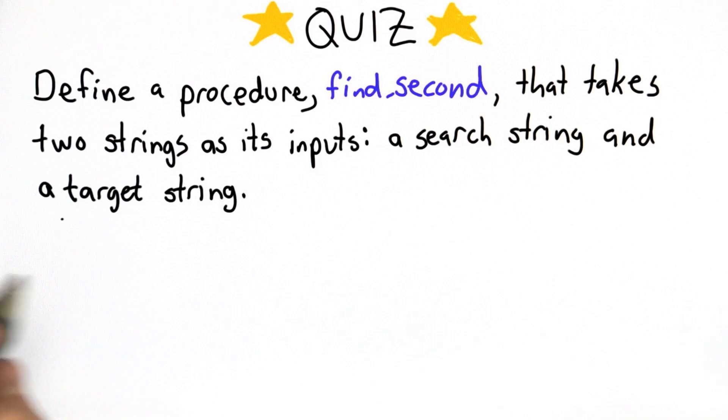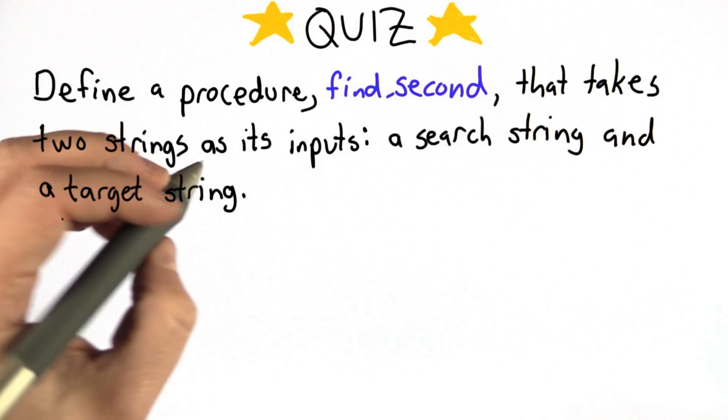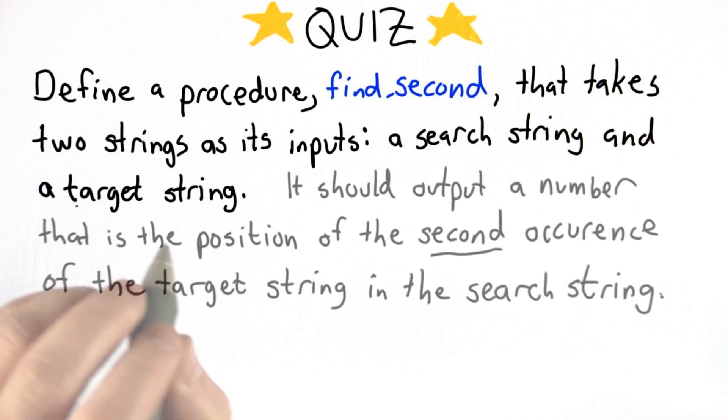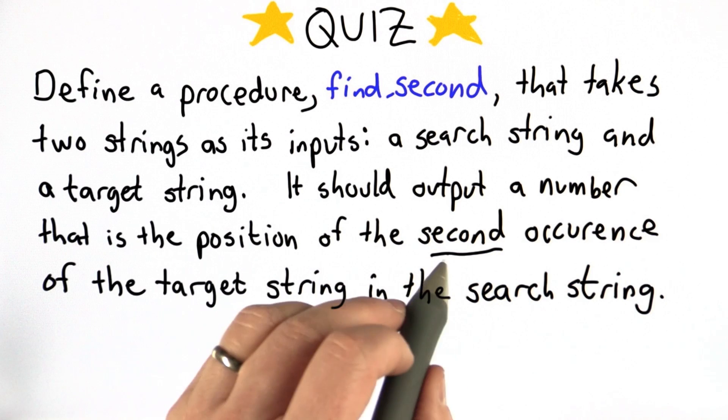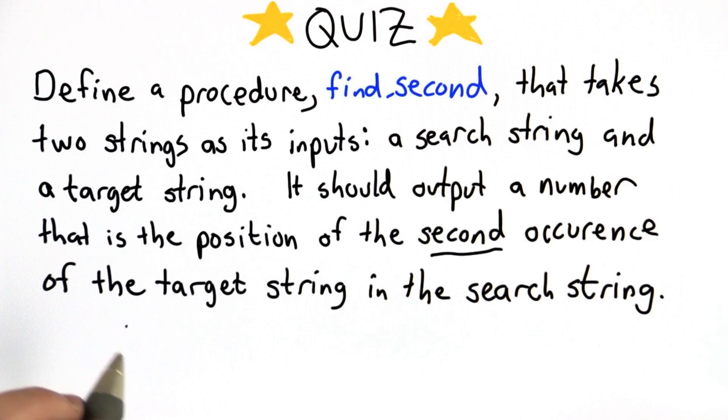and your goal is to output a number that is the position of the second occurrence of the target string in the search string.